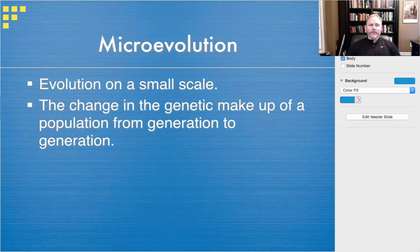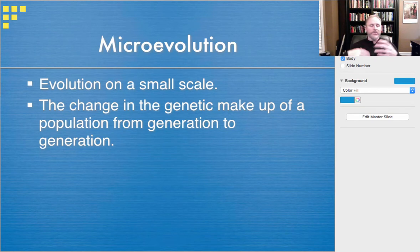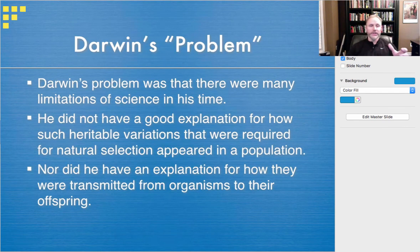Microevolution is basically evolution on the small scale — the change of the genetic makeup of a population. These are mutations, recombination, and other things that occur from generation to generation.